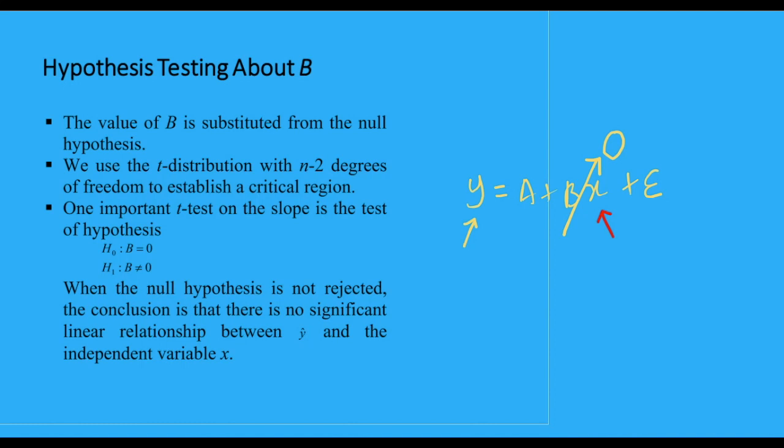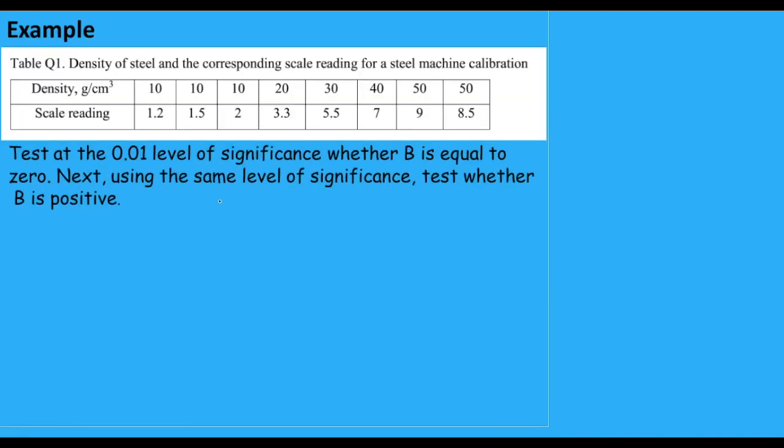Okay, now we could start discussing the example. So this question is based on the previous question. Okay, we have the same data set, and you are asked to test at the 0.01 level of significance, so alpha 0.01, where the B is equals to zero. And then next, you have to do something else. So first, let's solve this. We need to test whether B is equals to zero. That means the null hypothesis would be that the slope is equals to zero. And what is the alternative plus? Yes, the slope is not equals to zero. So we have a total test.